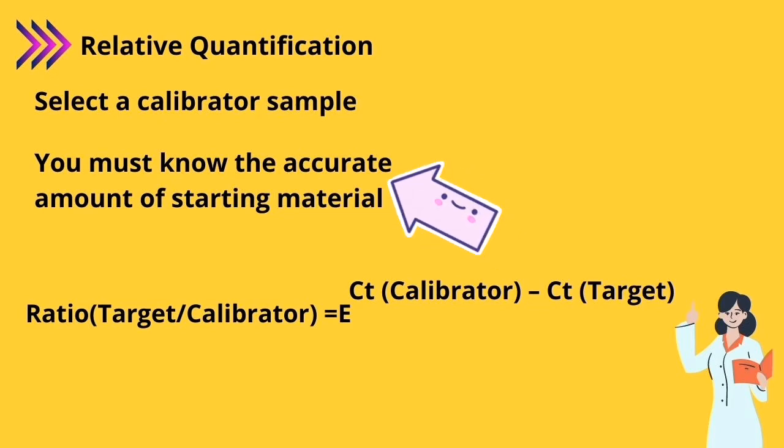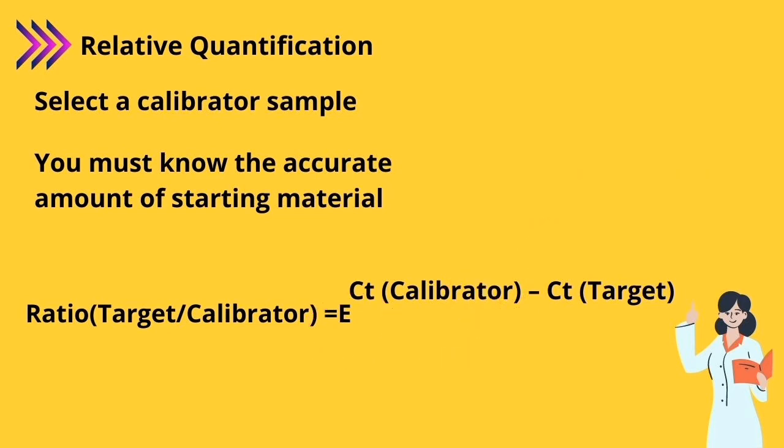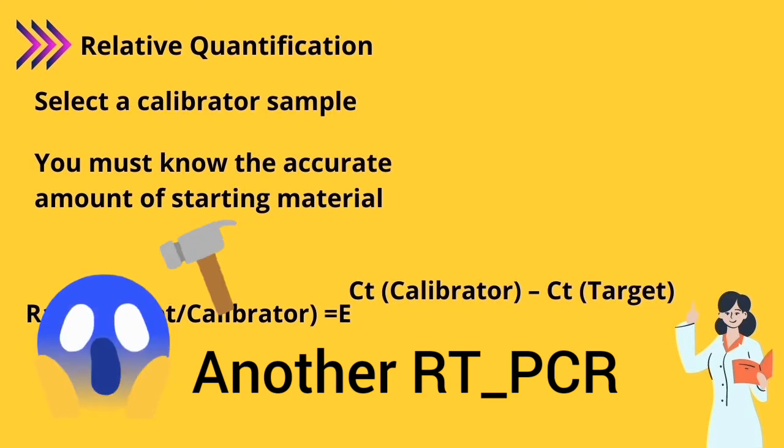To know exactly the accurate quantification of a starting template, you can see here the appropriate equation you can use for this method. The alphabet E here stands for efficiency. You can calculate it with slope of standard curve. For this, you have to perform serial dilution from template and conduct real-time PCR and draw standard curve.